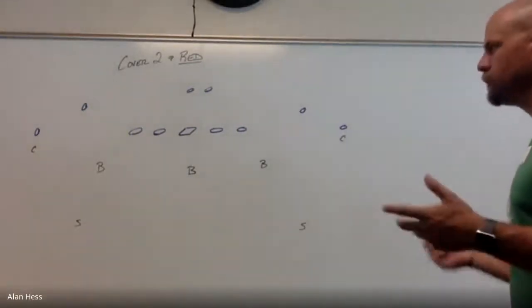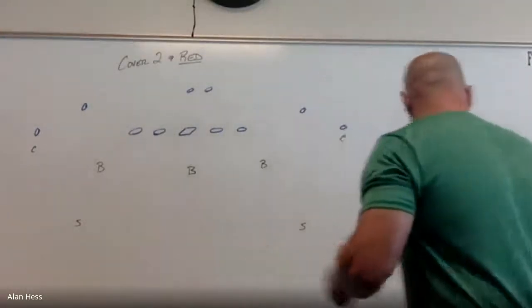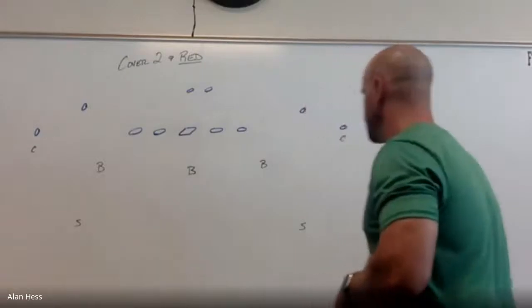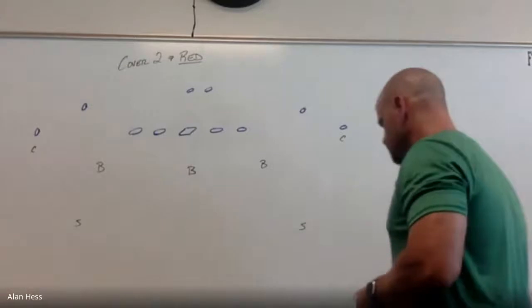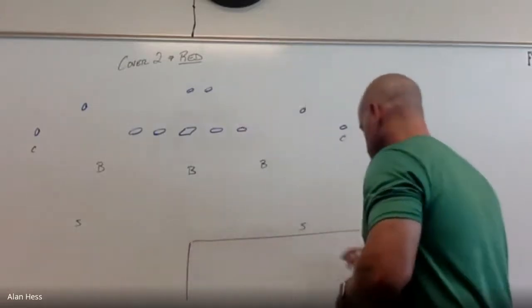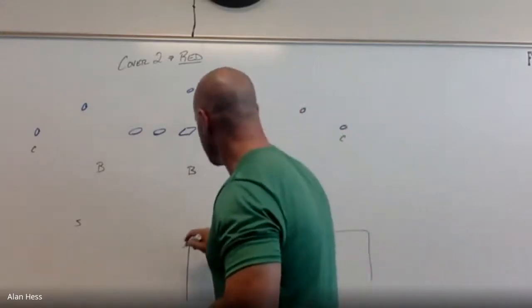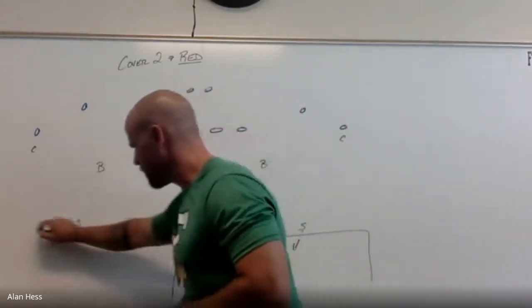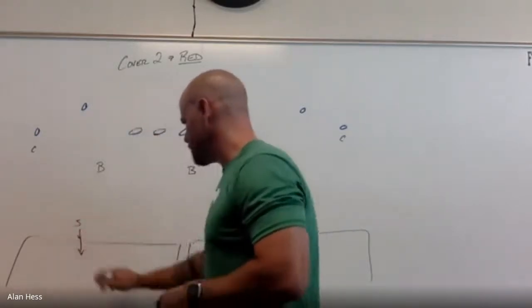So Cover 2 is very simple. I'm going to use my black marker for right now. Cover 2 basically breaks the field down into seven zones. Our safeties have the deep half of the field. This safety over here has this deep half, and this safety over here has this deep half.